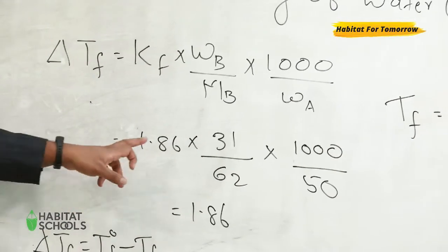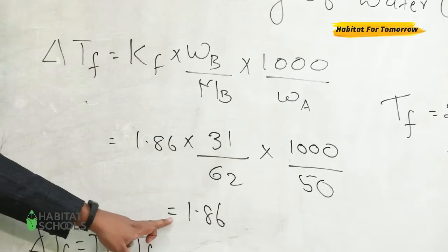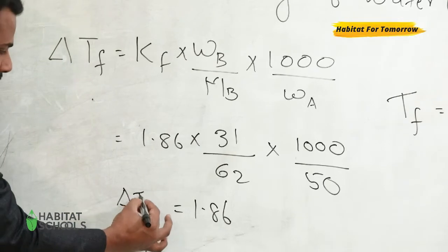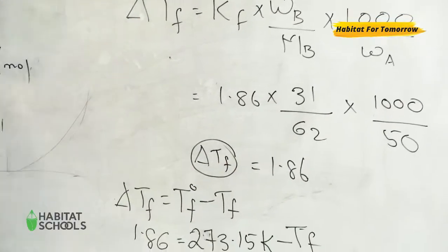Okay, so after solving you will get the value 1.86. This is actually ΔTf, that is depression in freezing point.